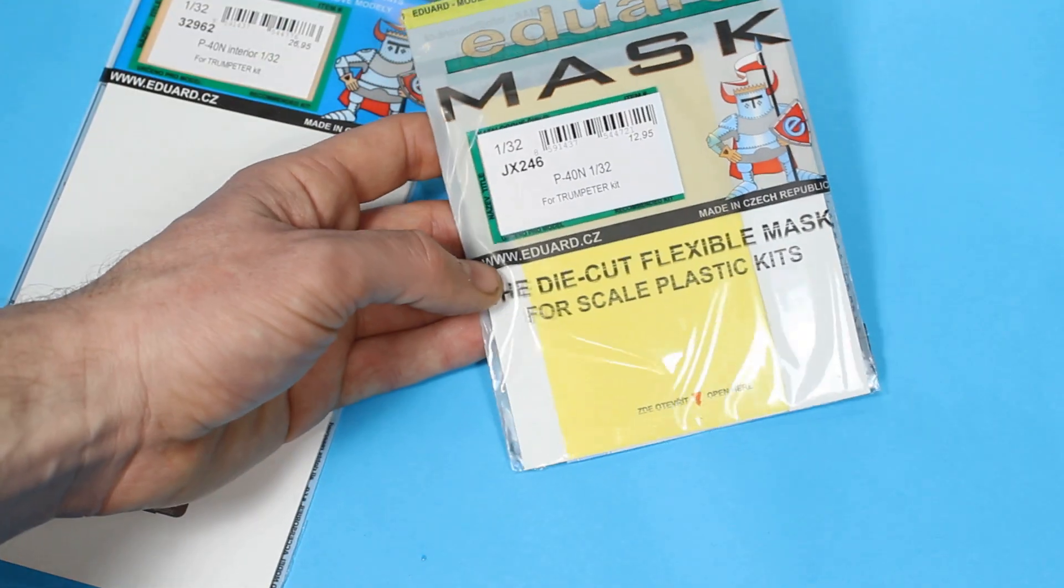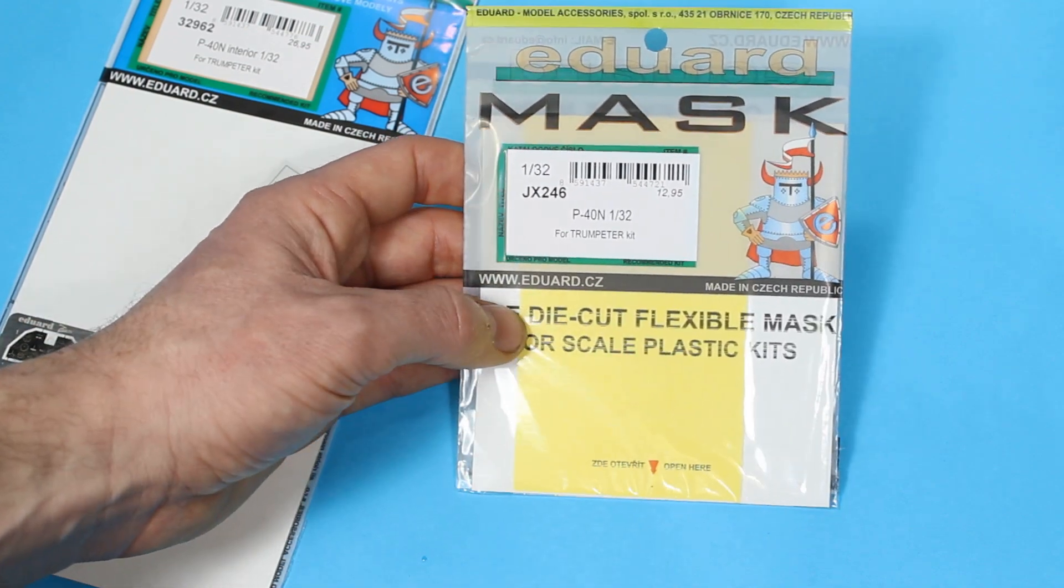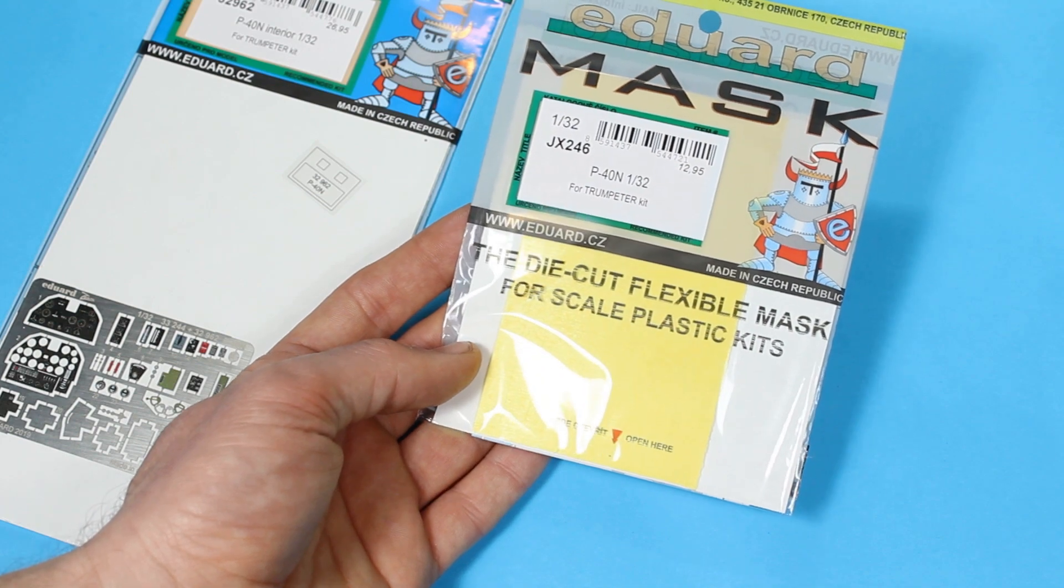Then we've got the mask set. That's pretty straightforward again, it's already pre-cut so you just peel it off, stick it on. Makes life a lot easier and keeps the canopy nice and clear.